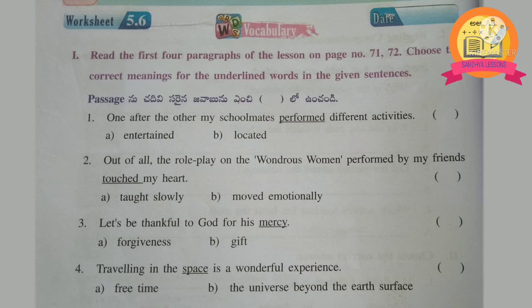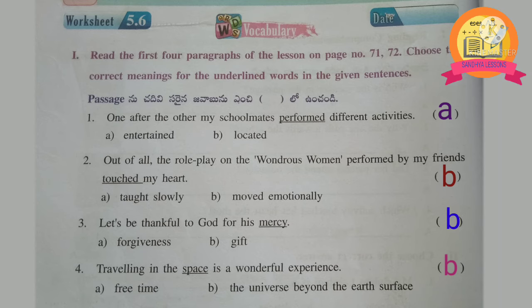Worksheet 5.6, 1st Roman: read the first four paragraphs of the lesson on pages 71–72. Choose the correct meanings for the underlined words. 1st one: 'One after the other, my schoolmates performed different activities' – performed means entertained. 2nd one: 'The role play on the wondrous woman touched my heart' – touched means moved emotionally. 3rd one: 'Let's be thankful to God for His mercy' – mercy means gift. 4th one: 'Travelling in space is a wonderful experience' – space means the universe beyond the earth's surface.